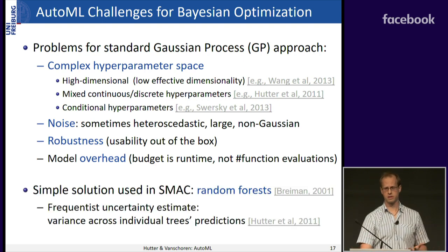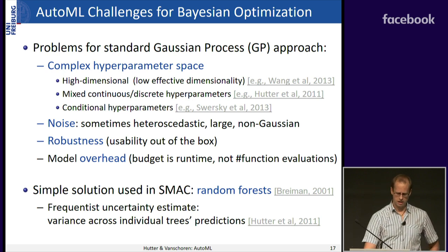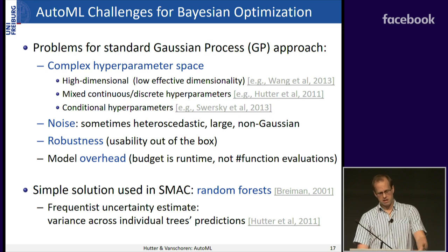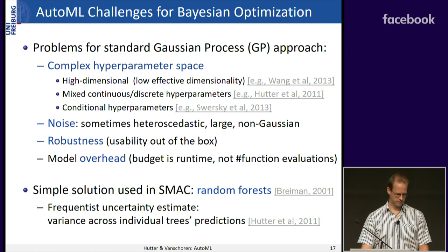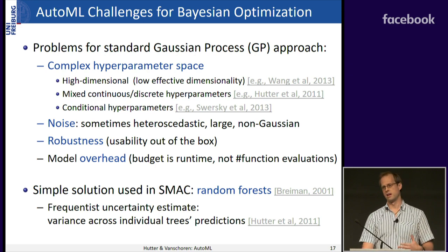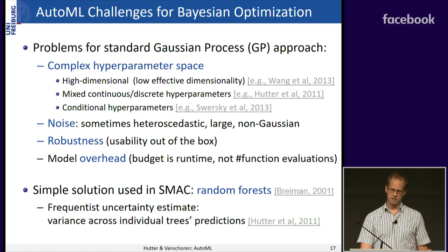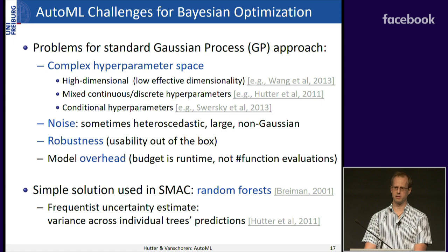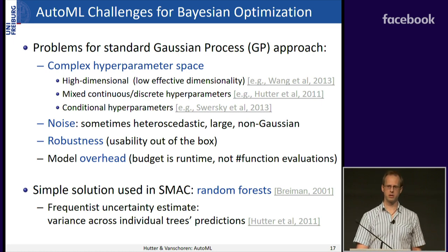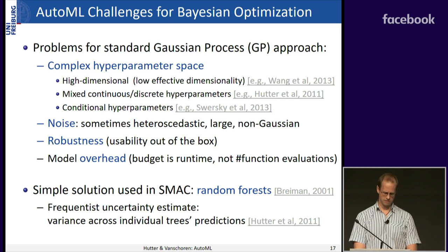A different model used in my own work is a random forest, which works out of the box: not sensitive to its own hyperparameters, can work in high dimensions with mixed continuous and discrete hyperparameters. The downside is it's not a great probabilistic model. We use frequentist uncertainty estimates — modeling the variance across individual tree predictions. If all trees predict the same thing, we are certain; if they predict differently, we are uncertain. We use this simple model even in the 768-dimensional space.